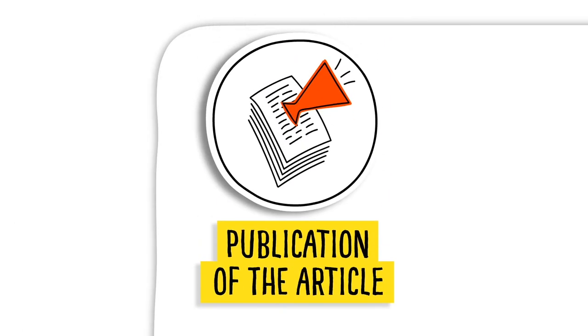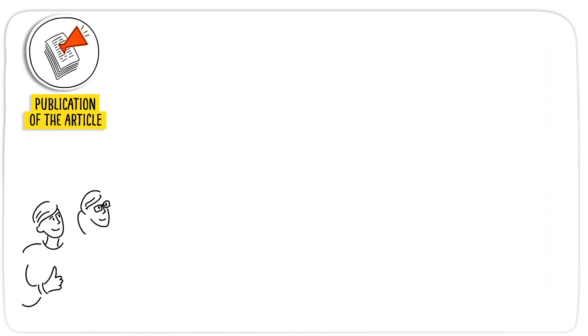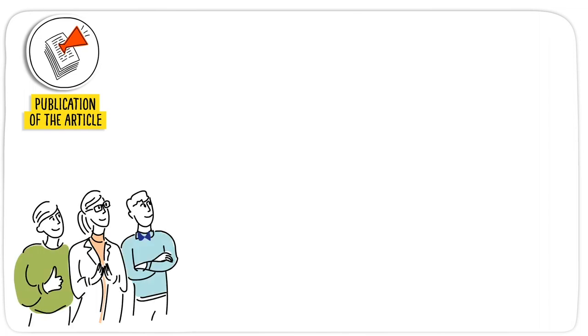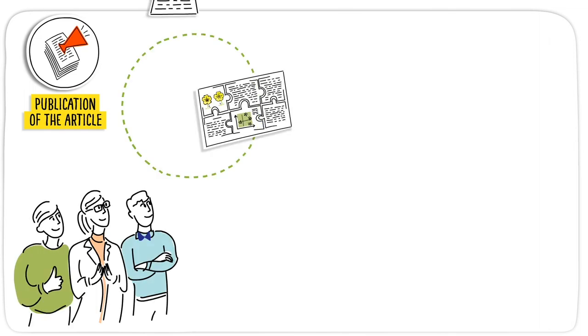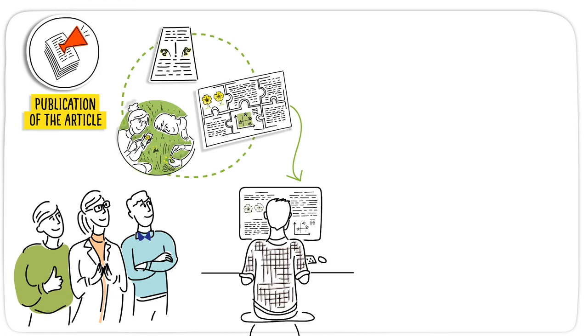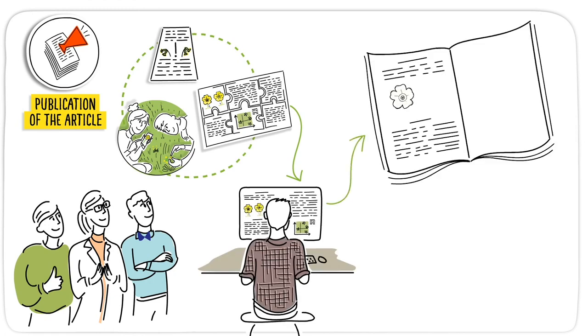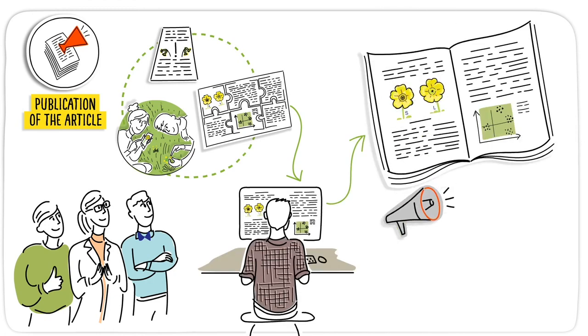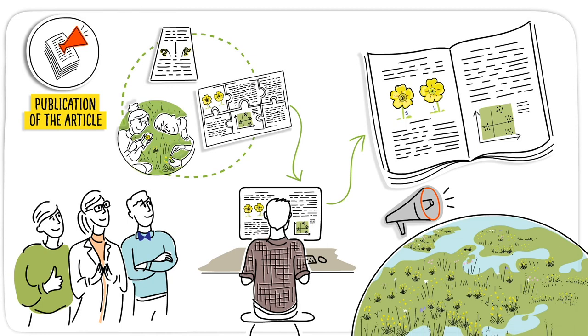Publication of the article. If all goes well, other researchers will also find that our research and the respective article are good enough to be published in a scientific journal. If that is the case, the article will go through the final editing, and the research paper is published. The rest of the world will hear of our research.